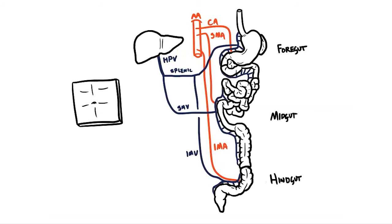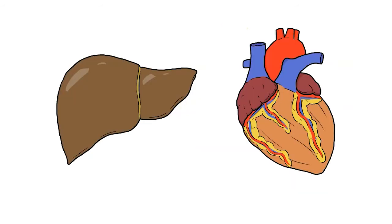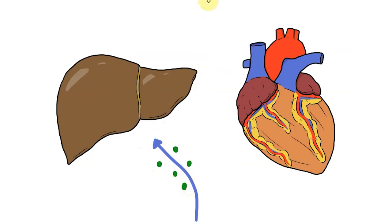The portal vein is a bit odd. Instead of returning the deoxygenated blood to the heart, it takes this blood to the liver. Why do we send this blood to the liver and not back to the heart? Well, this blood contains any nutrients or chemicals that have been absorbed by the gut tube, and this needs to be filtered and cleaned by the liver before it can recirculate around the body.